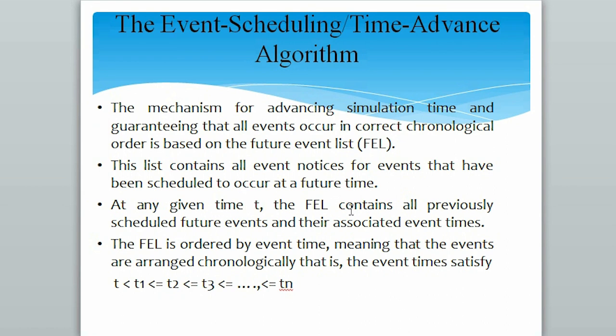At any given time t, the FEL contains all previously scheduled future events and their associated event times. The future event list is ordered by event time, meaning that the events are arranged in chronological order.